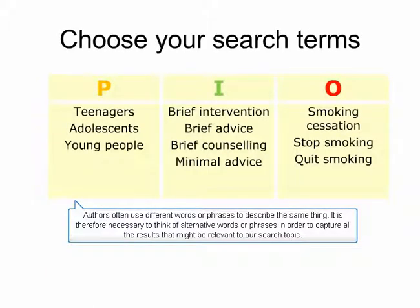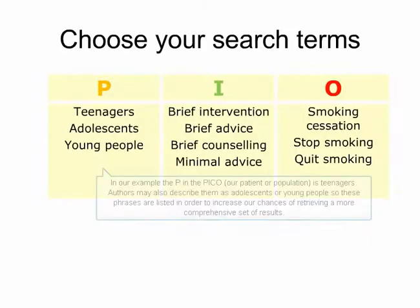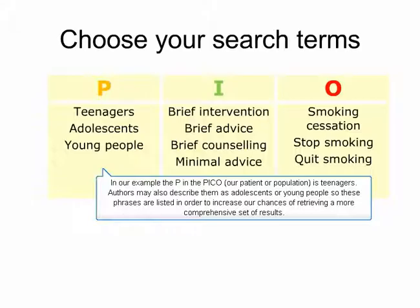Authors often use different words or phrases to describe the same thing. It is therefore necessary to think of alternative words or phrases in order to capture all the results that might be relevant to our search topic. In our example, the P in the PICO — our patient or population — is teenagers. Authors may also describe them as adolescents or young people. So these phrases are listed in order to increase our chances of retrieving a more comprehensive set of results.